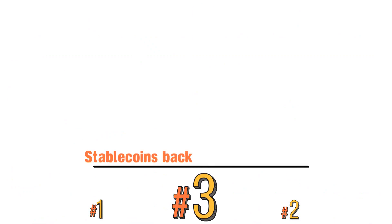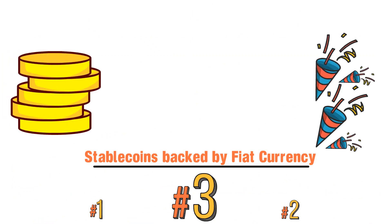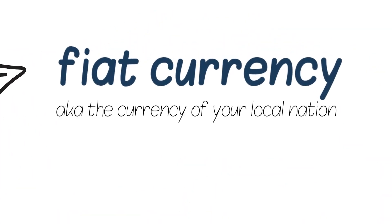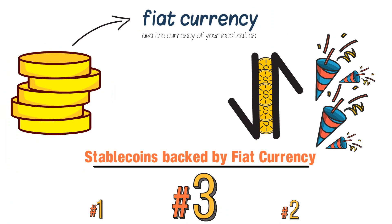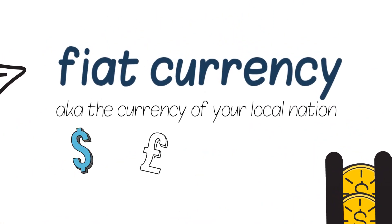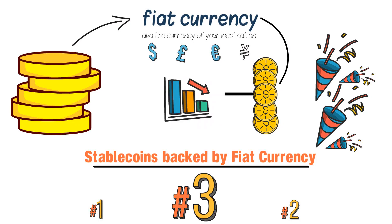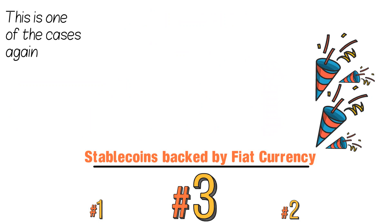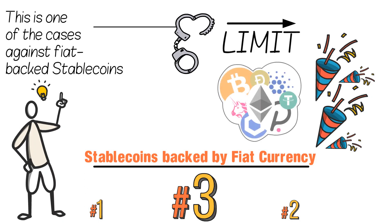Number three: stablecoins backed by fiat currency — the most popular category. These are the most common stablecoins circulating on all major exchanges today, backed by fiat currencies like the US dollar, the British pound, the euro, and the Chinese yuan. It's key to note that fiat-backed stablecoins are exposed to events like inflation — as a reserve currency loses value, so will the stablecoin. Some say these limit the true potential of crypto since they essentially act only as proxies for fiat currencies.